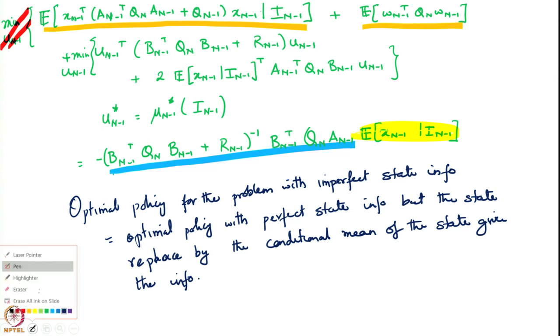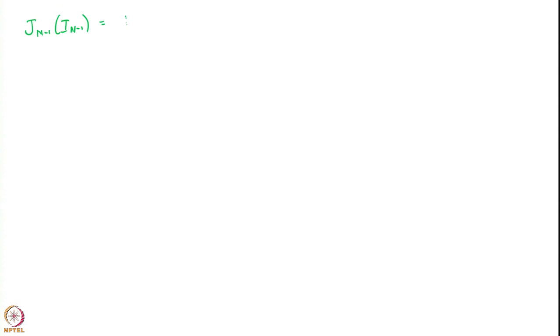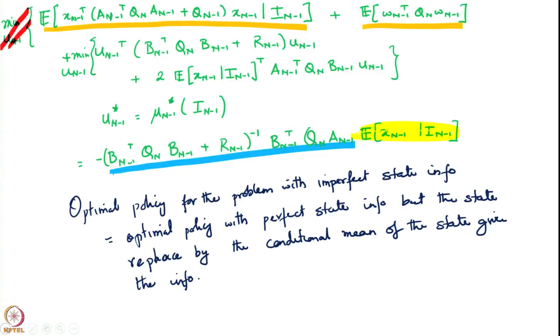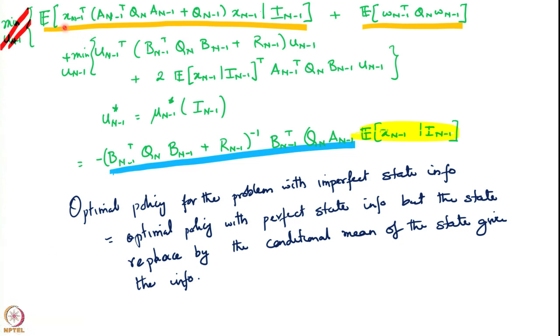This is what we found at time n-1. Let us see if this carries over to other time steps and do a few more calculations to see how far this can be pushed. Now, substituting mu_(n-1)* into J_(n-1) to get J_(n-1), we get J_(n-1) of i_(n-1) equal to the expectation of the expectation — the remaining terms that are still present after substituting mu_(n-1)* with this expression.